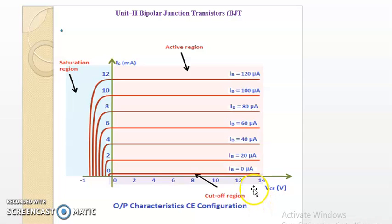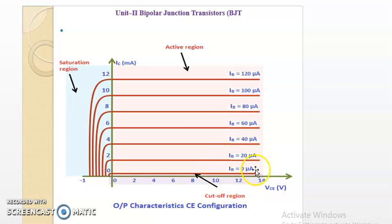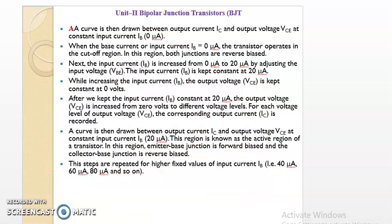As we increase the value of base current, that is input current, there is an increase in collector current. Here base current is kept constant, and the collector-emitter voltage is varied. The curve between collector current and collector voltage at constant base current is nothing but the output characteristics.